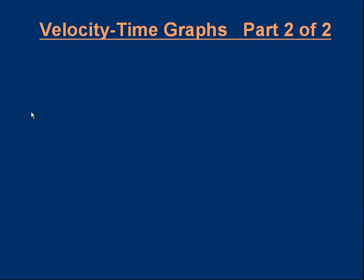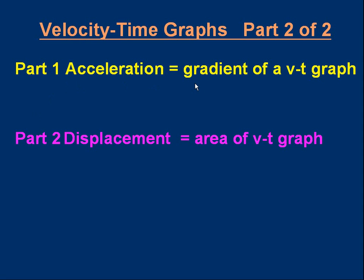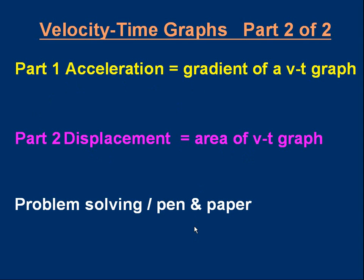Hello. This is part two of a lesson on velocity-time graphs. In part one we saw how to work out acceleration from the gradient. In part two we're going to see how to work out displacement from the area of the velocity-time graph. We'll need a pen and paper as there are exercises for you to try as we work through, so now is a good time to pause the video to get them.